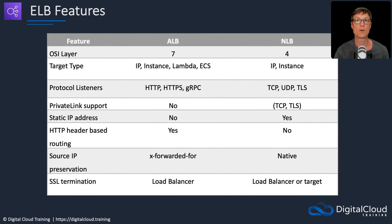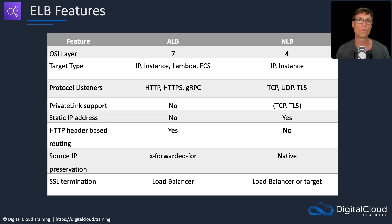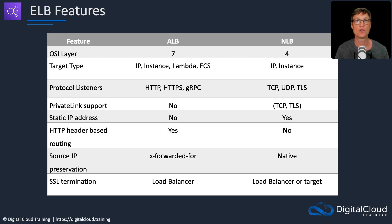Now I want to cover the ALB and NLB side by side, as these are the ones you'll use for most load balancing use cases. Remember with the OSI model: the ALB is at layer seven and the NLB is at layer four, meaning they use different information to make forwarding decisions. The target type for an ALB can be an IP address, an instance, a Lambda function, or a container. With the NLB, it can be an IP address or an EC2 instance. For protocol listeners, the ALB supports HTTP and HTTPS, and gRPC is supported through HTTP/2. The NLB listens on TCP, UDP, and TLS.